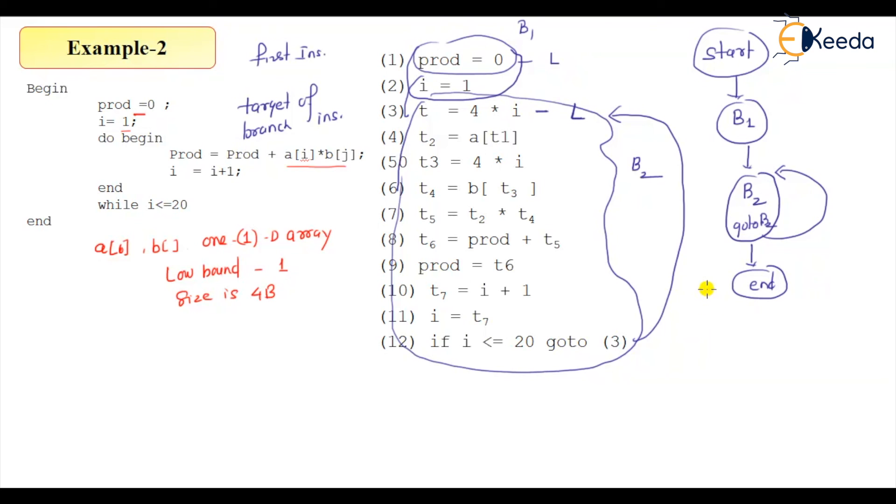And sometimes some question can be asked which can be a numeric value. So one kind of question is number of nodes, number of nodes and edges - nodes and edges in control flow graph.